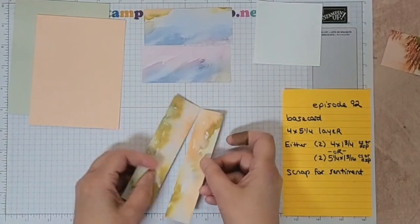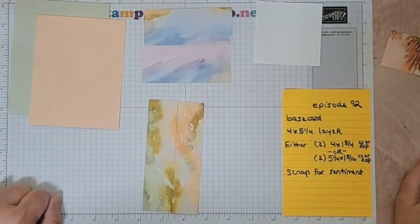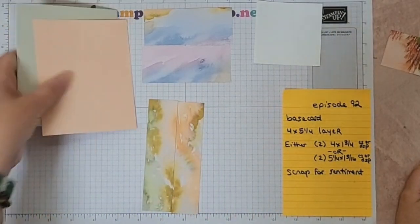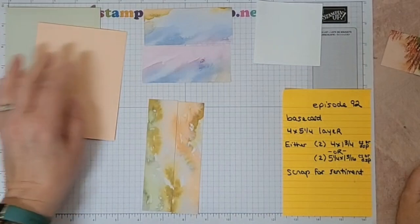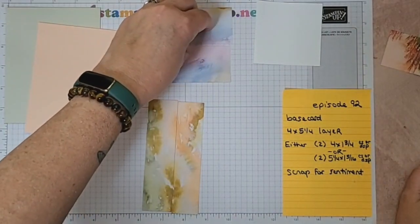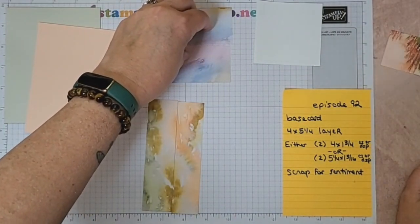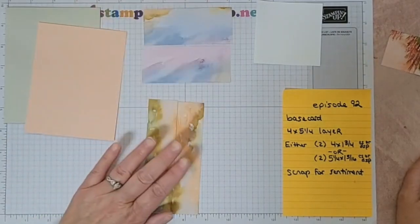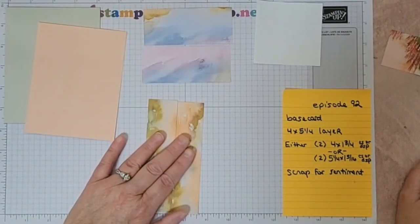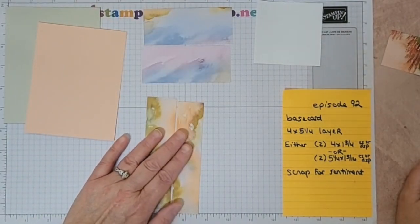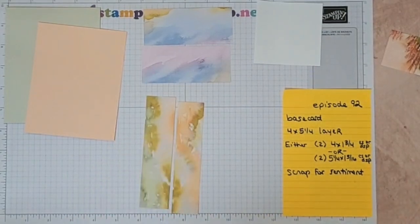All right guys, that's all you need: base card, a layer, and then either two four by one and three-fourths, or two five and a fourth by one and five-sixteenths. All right guys, thanks a lot for stopping in. We'll see you on Friday to finish this up.